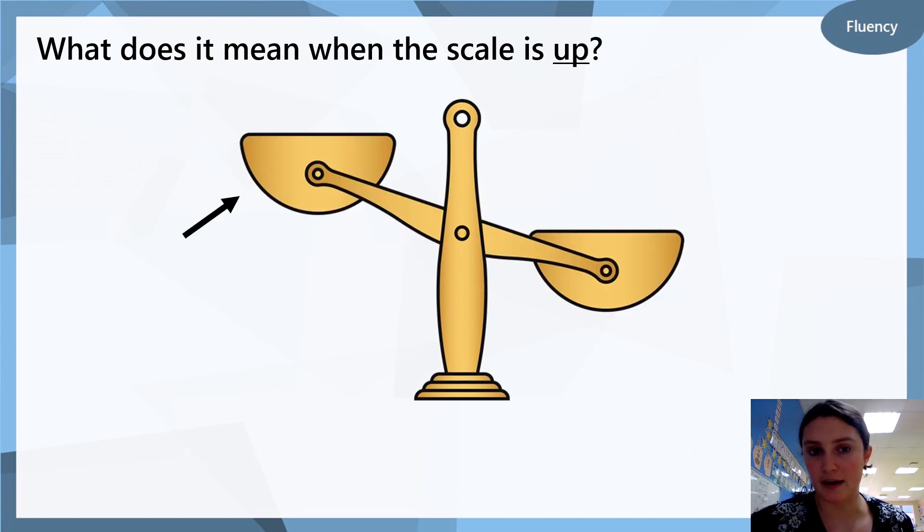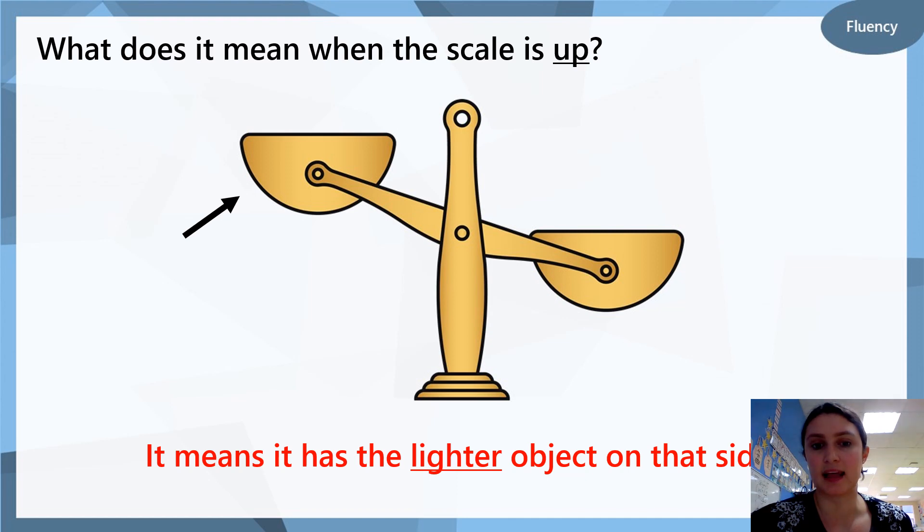Now the arrow is pointing at the side of the scale that is up. What do you think that could mean? It means that the lighter object or the lighter thing is on that side. So when we have a scale and one side is down, the heavy thing is there, and when one side is up, then the light thing is on that side.